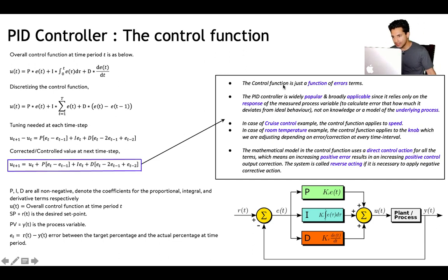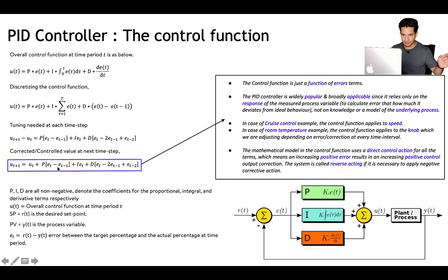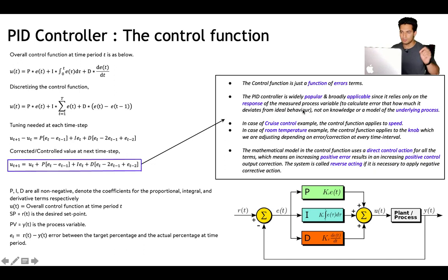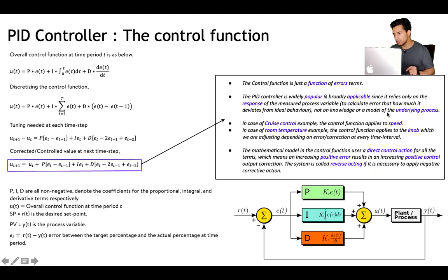Something magical happens here: the control function is just a function of error terms. If I know the error at time t, t-1, and t-2, I can calculate what correction is needed. The PID controller is broadly applicable since it relies only on the response of the measured process variable — the error — without any knowledge of the underlying process.